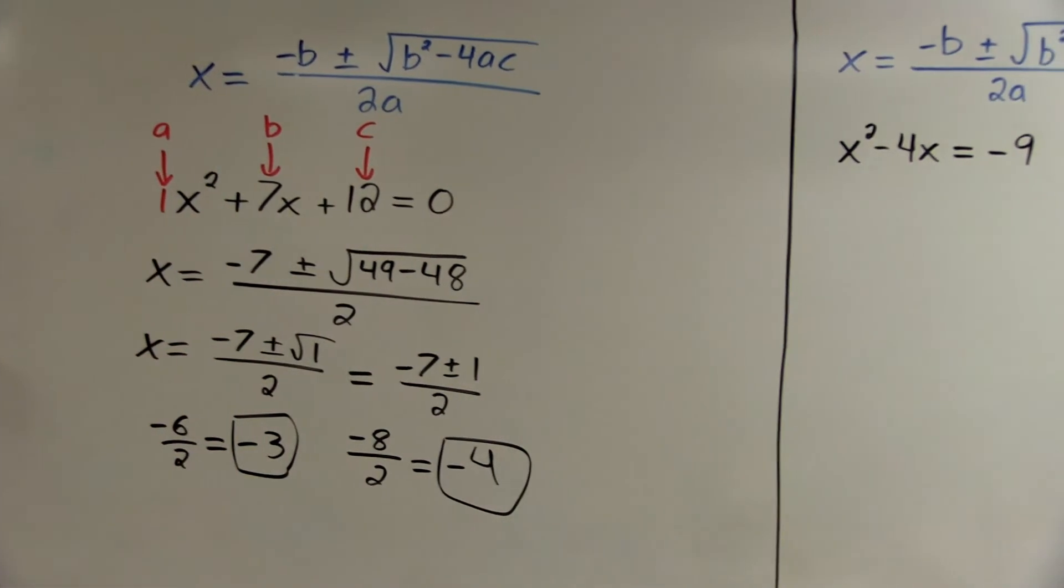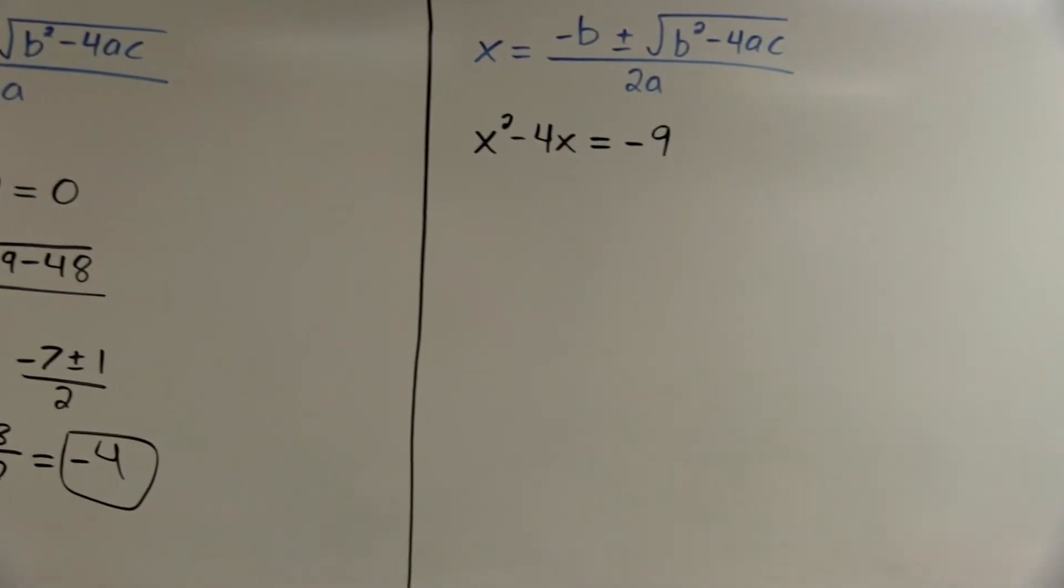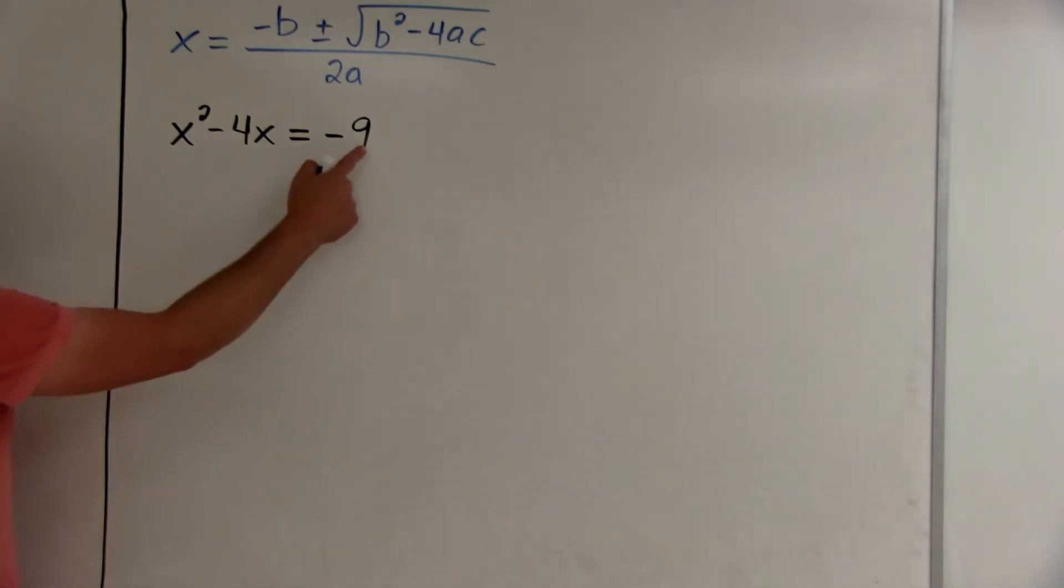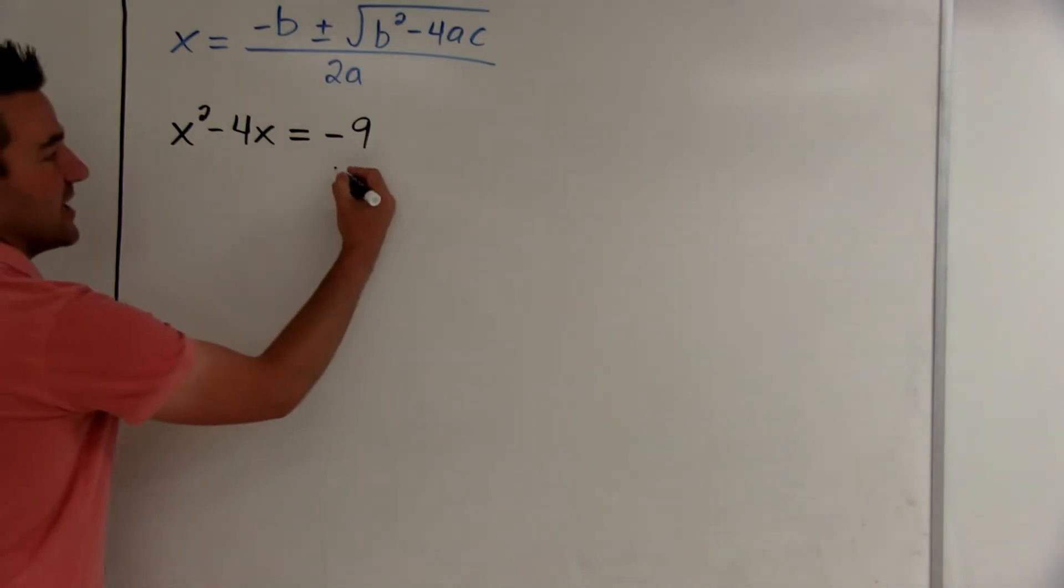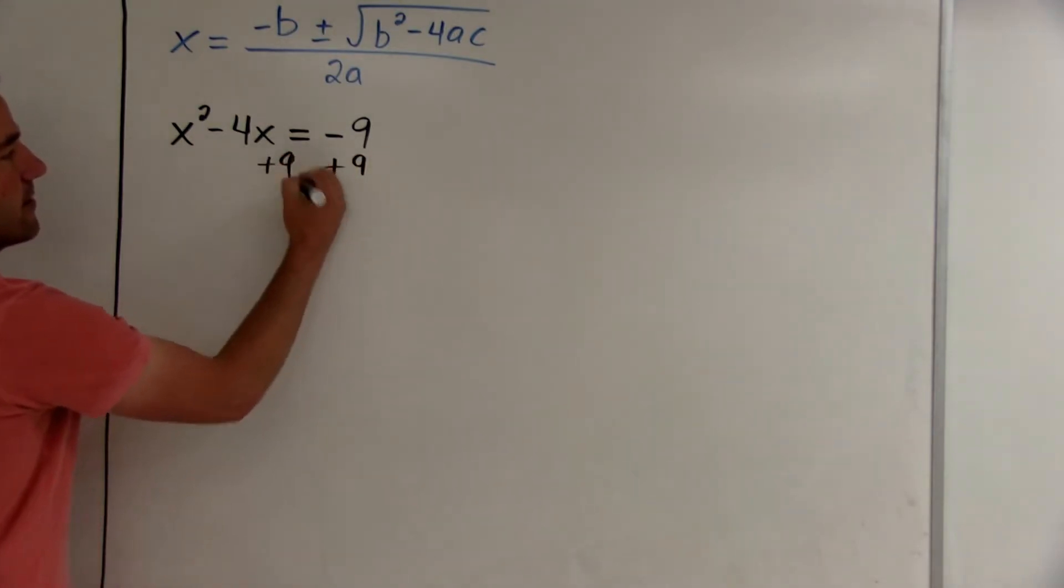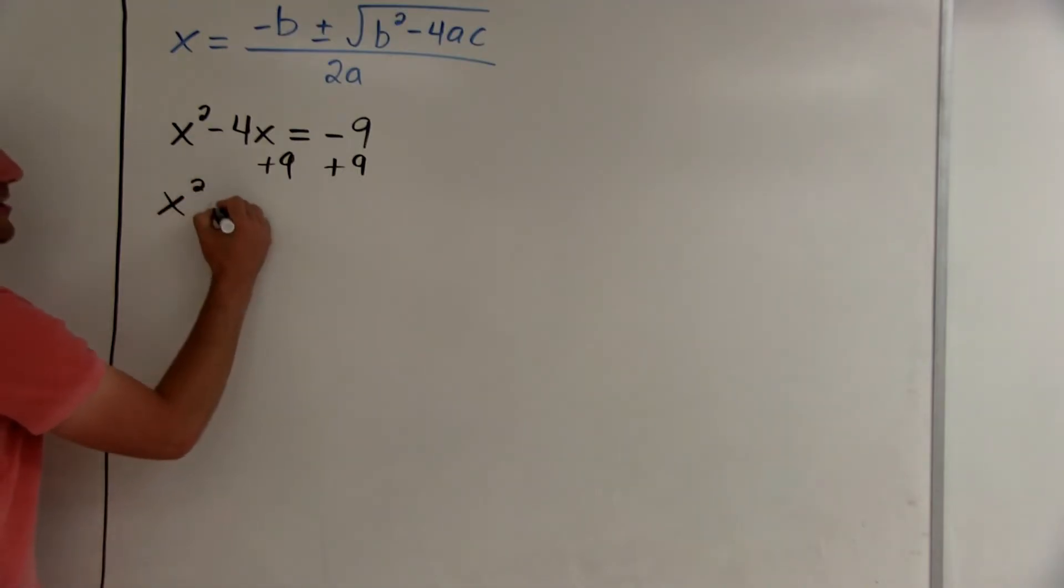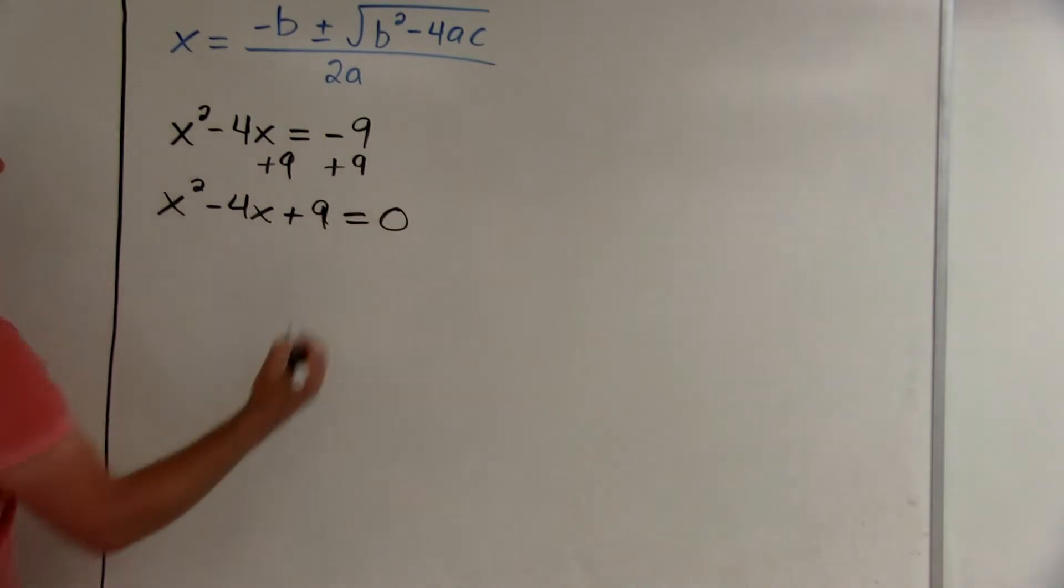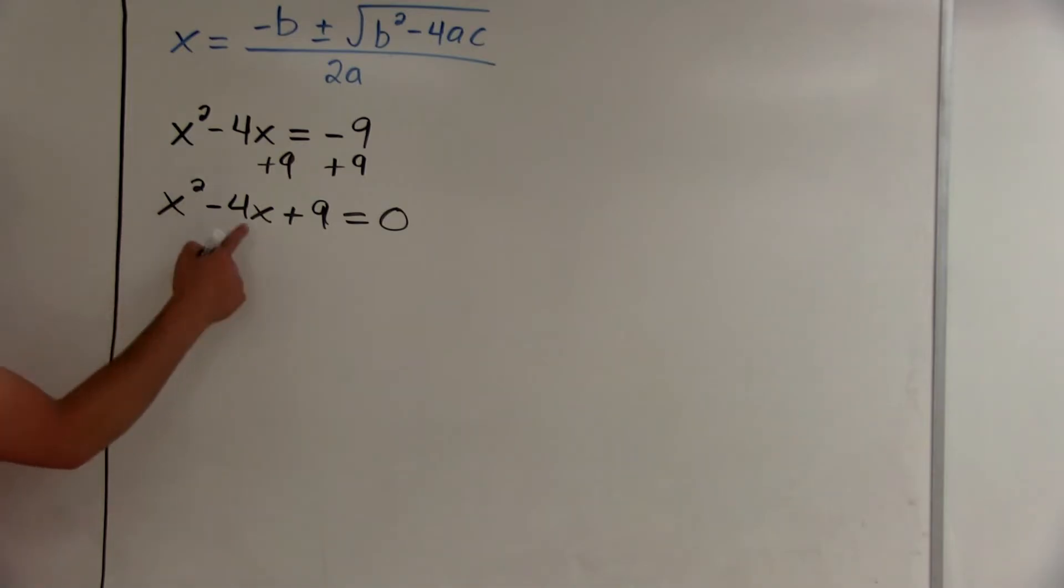Let's look at another one. This one's actually not ready to use the quadratic formula on yet. To use the quadratic formula, you need to make sure that the other side of the equation is equal to 0. So we can fix that. If we add 9 to each side, we can rewrite this equation as x squared minus 4x plus 9 equals 0. Now we're ready to use the quadratic formula. Here's a, it's a 1 again. b is negative 4, and c is 9.